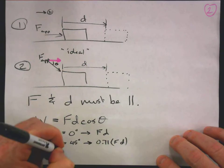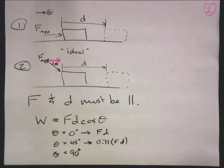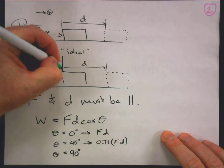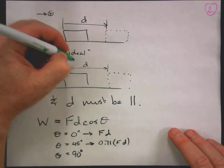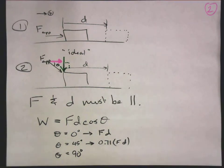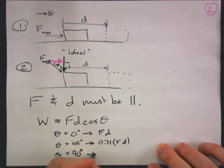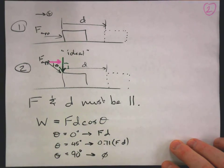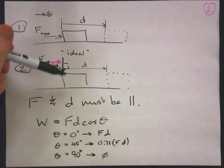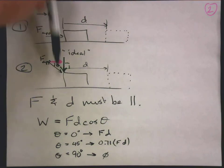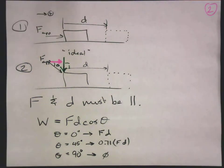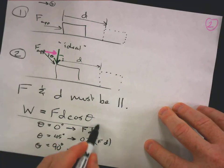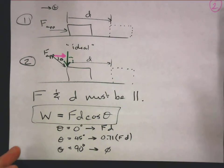What about the extreme case where theta is 90 degrees — you push at a right angle to the direction of motion? Cosine of 90° equals zero, so no work is done. The box might still move, but that particular force is not doing any work on the box while it moves. We'll always calculate work using W = Fd cosθ.